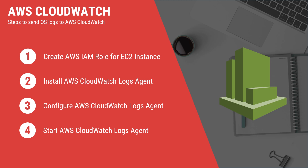If you're using an EC2 instance, it's always recommended to use IAM roles instead of access keys. Next we need to install and configure the CloudWatch logs agent on your EC2 instance. During this configuration we'll specify the log file path, destination CloudWatch log groups and streams. Once the agent is configured, we can start the agent service and we should be able to see the logs in AWS CloudWatch.